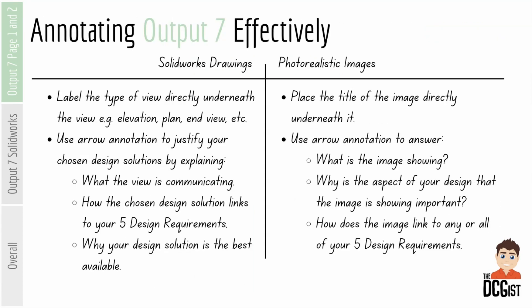And that brings us nicely on to annotating output 7 effectively. With your SOLIDWORKS drawings, you want to label the type of view directly underneath — that could be an elevation, a plan, an end view, a detail view, or a sectional view. You want to use arrow annotation to justify your chosen design solutions by explaining what the view is communicating, how the chosen design solution links to your five design requirements — it mightn't be all the design requirements for each one, it might only be one or two — and then why your design solution is the best available. When you're doing your SOLIDWORKS drawings, you don't want them to be too long; you want them to be succinct and short.